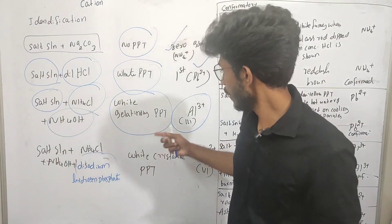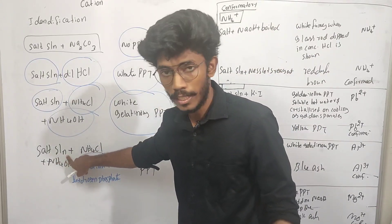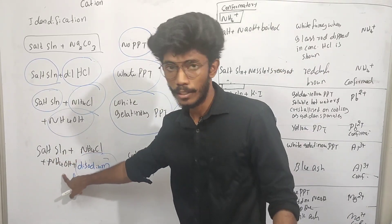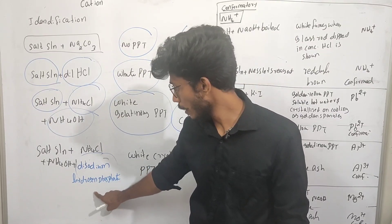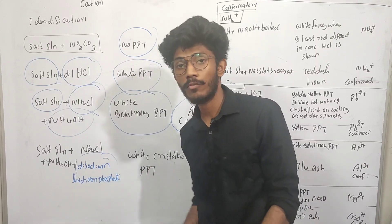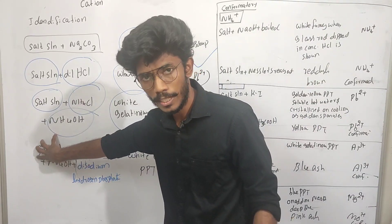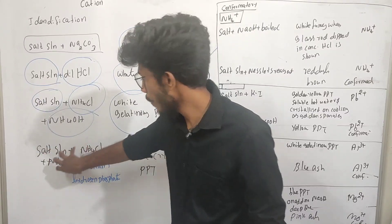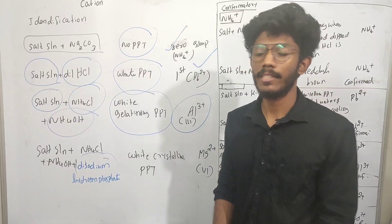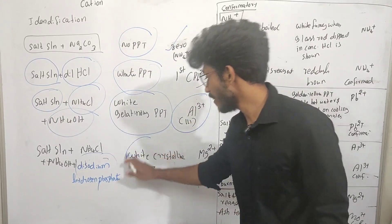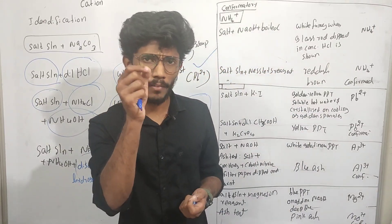Next, we have to test aluminium. We will test using the initial test — ammonium hydroxide and ammonium hydroxide — and disodium hydrogen phosphate, because we are using the sixth group. In the solution, if we want to take ammonium hydroxide or disodium hydrogen phosphate, we will observe white crystalline precipitate.